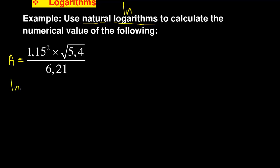Say ln A equals ln of 1.15 squared times square root of 5.4 divided by 6.21. This is how you introduce the ln. I think the right way to write it, just to make sure it's involving everything, you can write like that. So you've got ln on the left and ln on the right hand side. Now ln and logarithms use the same laws.